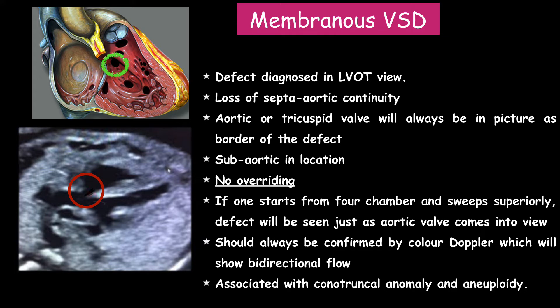If one starts from the four-chamber view and sweeps superiorly, the defect will be seen just as the aortic valve comes into view — this is the five-chamber view. This should always be confirmed by color Doppler, which will show bidirectional flow. This membranous VSD is commonly associated with truncal anomaly or aneuploidy.